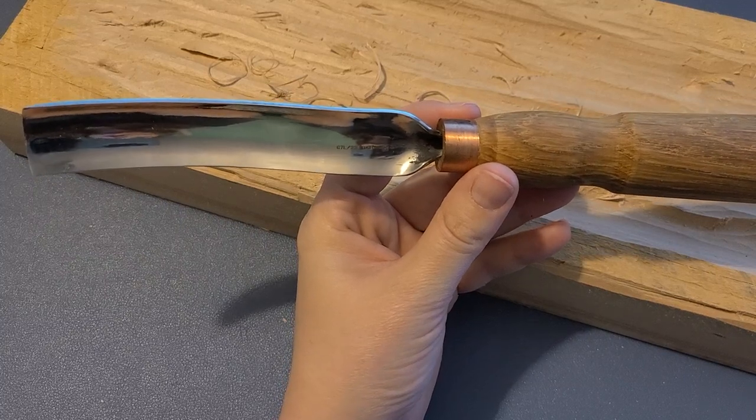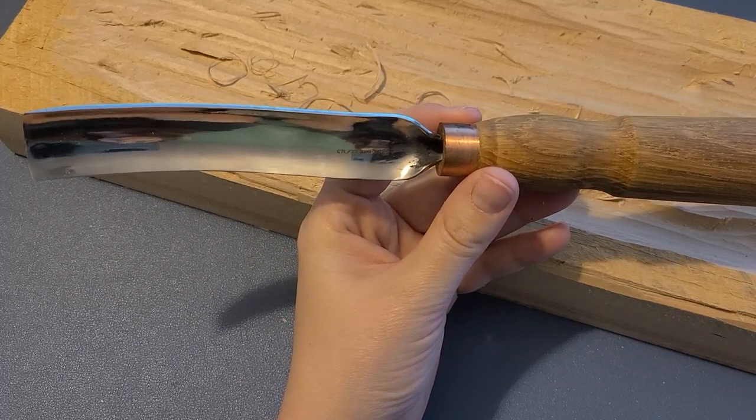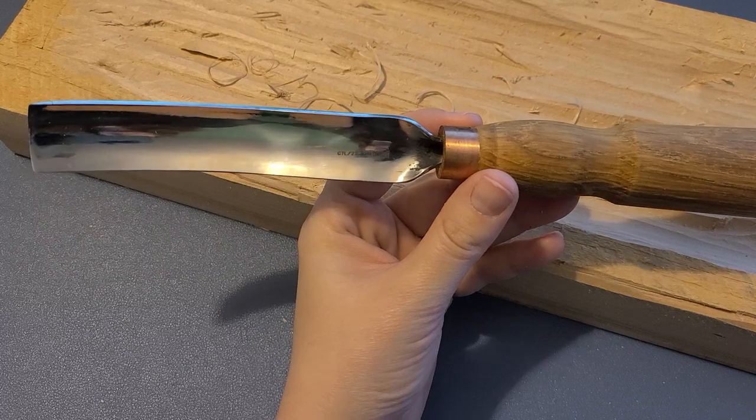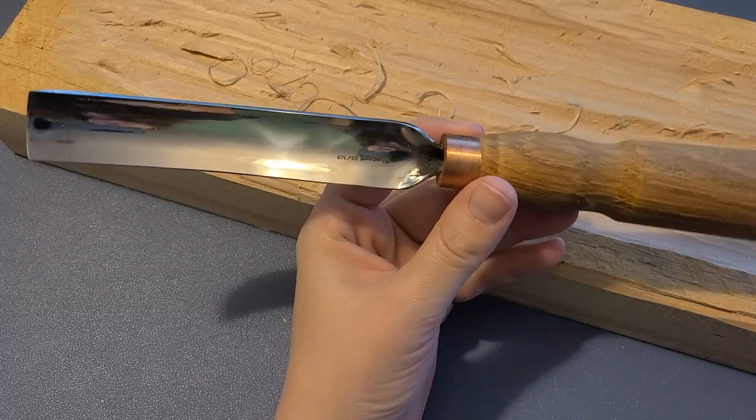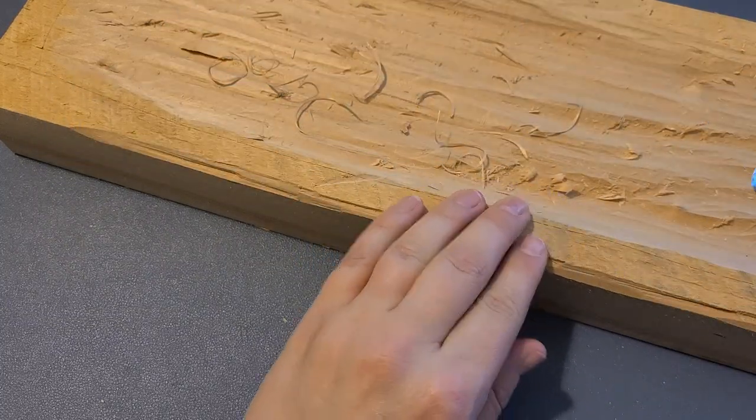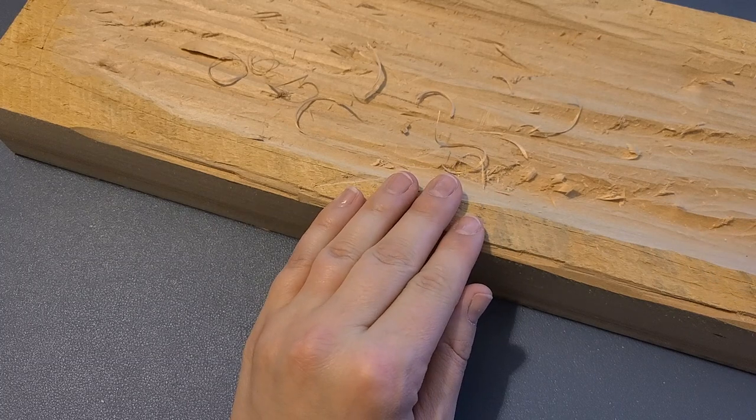This is the Beavercraft wood carving gouge chisel. It is for carving bowls and that's what I bought it for. I'm trying to carve a bowl out of this piece of wood here.